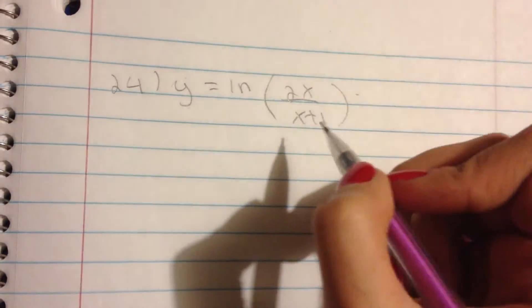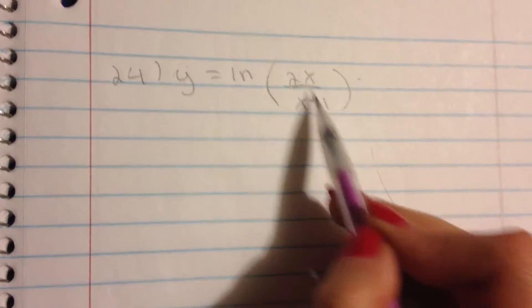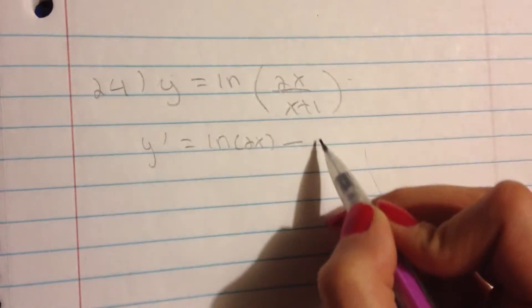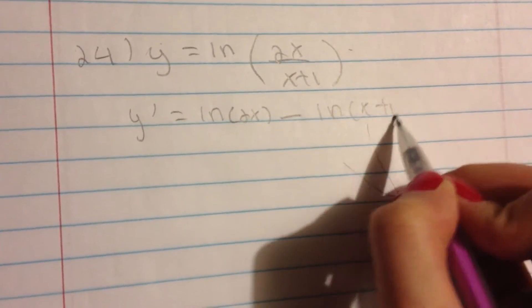Now let's start. Equals ln of 2x all over x plus 1. Now due to the natural log's property, we have to separate this division by subtraction. So y prime equals ln of 2x minus ln of x plus 1.